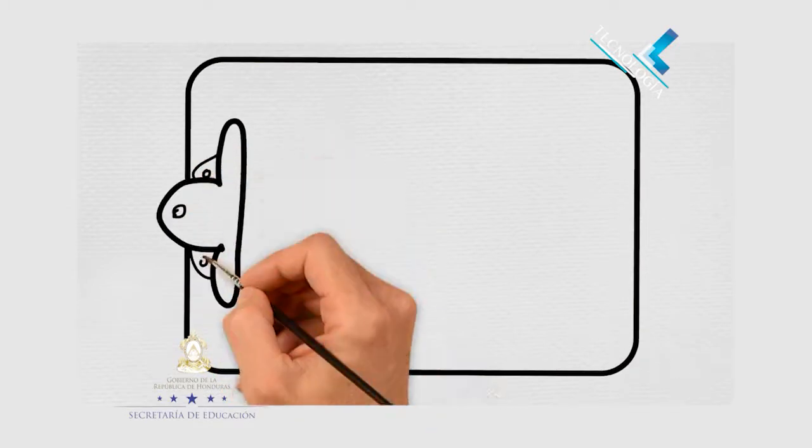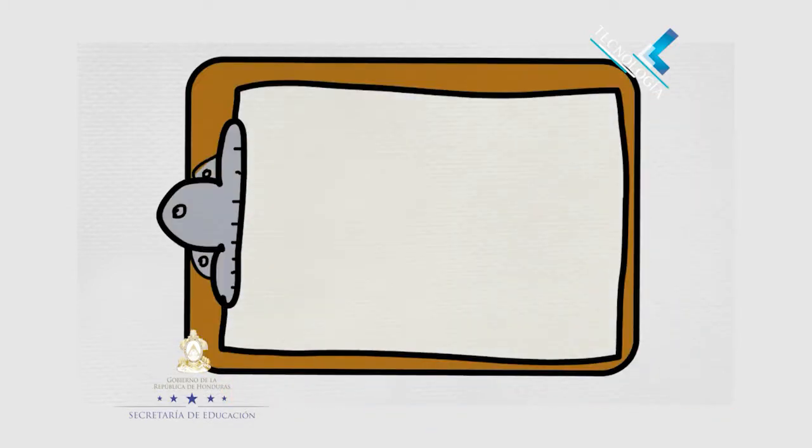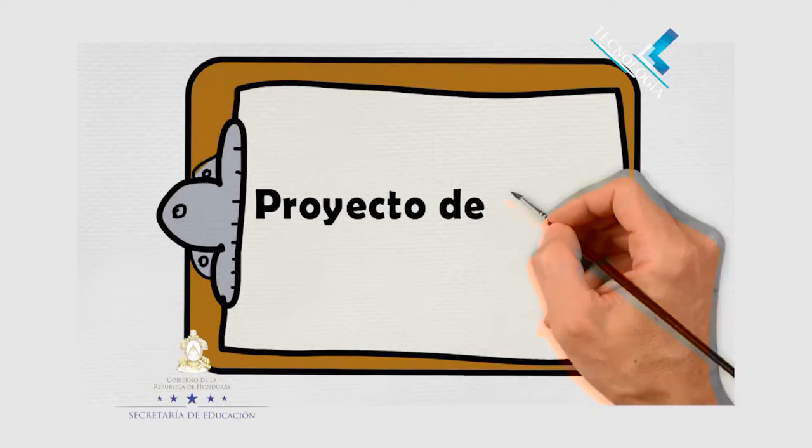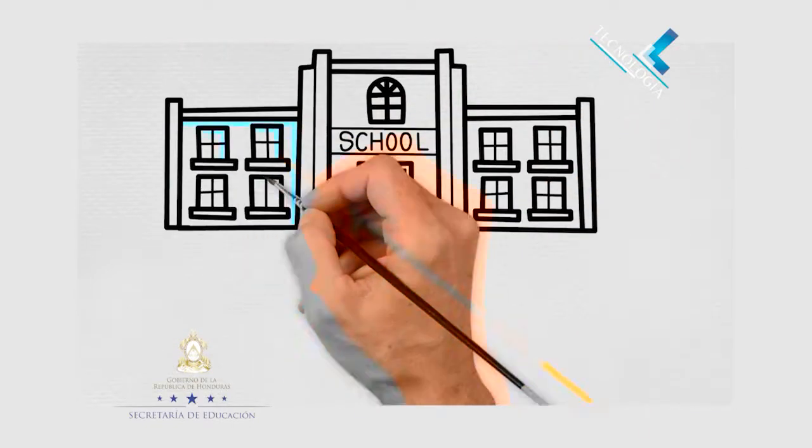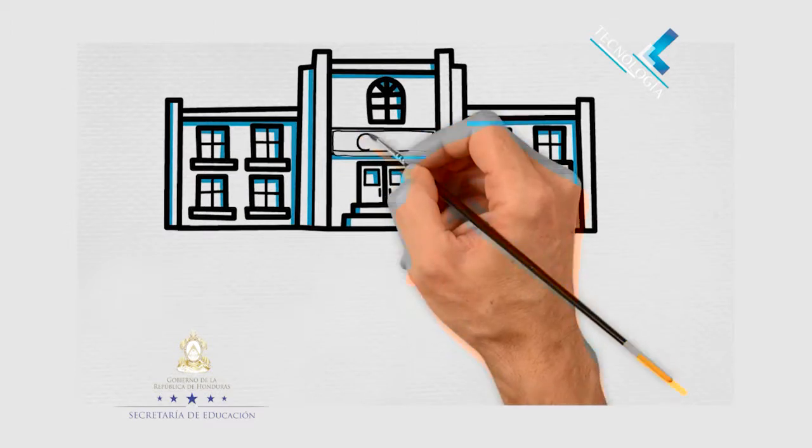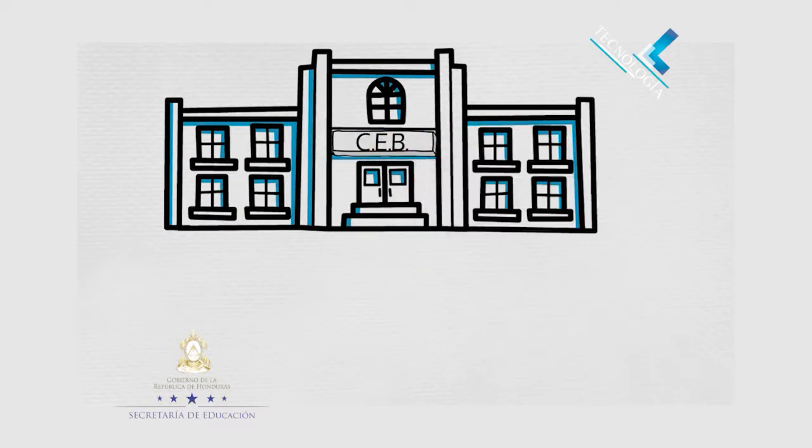Ahora, vamos a conocer un proyecto de clases, y lo veremos por etapas, para que nos demos cuenta que no es tan complicado. Veamos cómo se hace. Vamos a describir el proyecto, porque eso es lo primero antes de comenzar las cinco etapas.